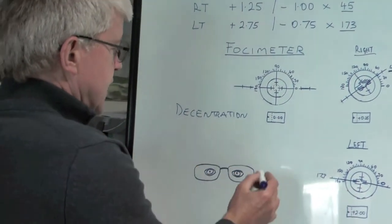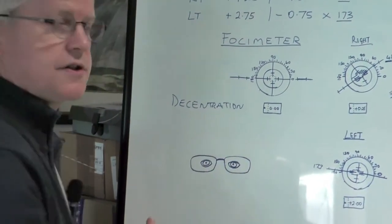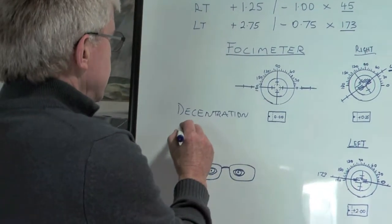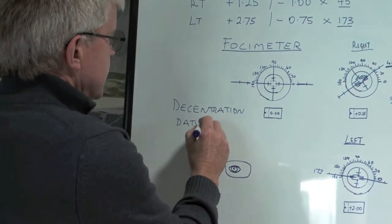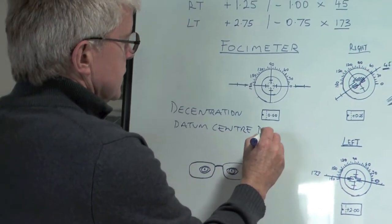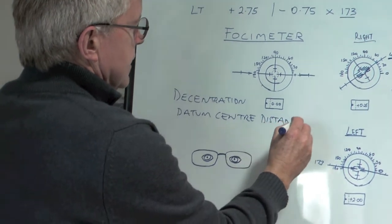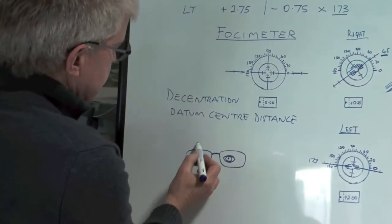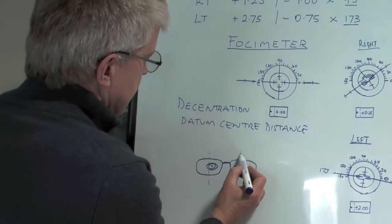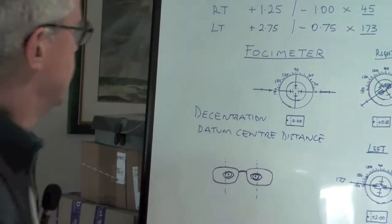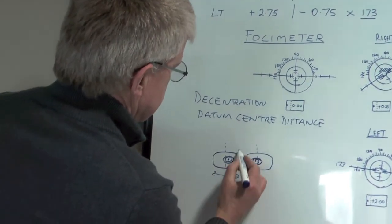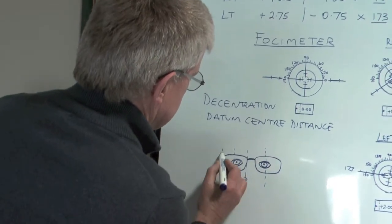So let's say that this is a frame. The way to do it is that you have to measure what we call the datum center distance. That is the distance between the center of this lens and the center of that lens. In other words, this distance is the same as that distance if we take this lens like that.